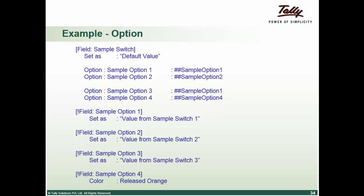If condition 1 is true, definition 1 and 3 can both be executed. Since this field cannot have 2 set-as values, only the last one — the value from sample switch 3 — will get executed and 1 will not. In case of condition 2, the set-as value from sample switch 2 will get executed. In case of condition 4 getting satisfied, the set-as will remain as default value but the color of the text would be orange. That's how the optional case works.